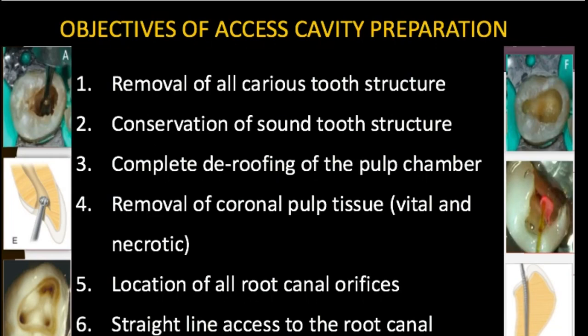Coming to the objectives of access cavity preparation: the first objective is to remove all the carious tooth structure. The second objective is to conserve sound tooth structure — you have to remove the carious tooth structure but at the same time protect the sound tooth structure. You should completely de-roof the pulp chamber and remove the coronal pulp tissue, whether vital or necrotic. You should locate all the root canal orifices and have straight-line access to the root canal. All these objectives hold good for your traditional access cavity preparations. These days there are many conservative modifications of access cavity preparation.